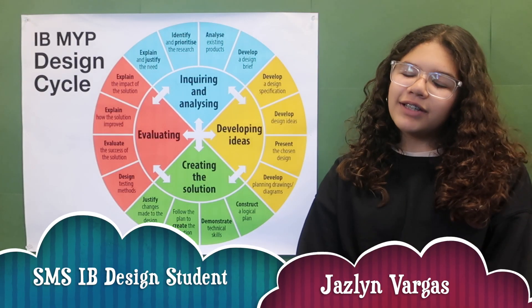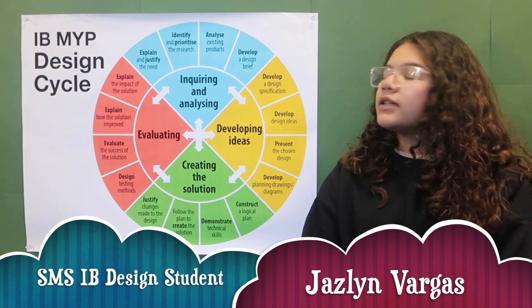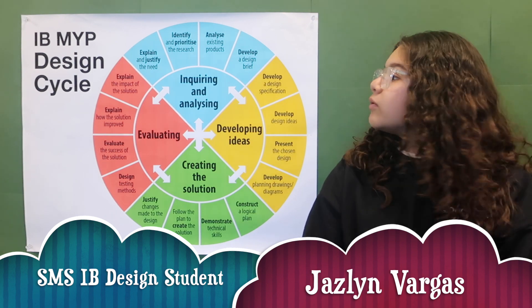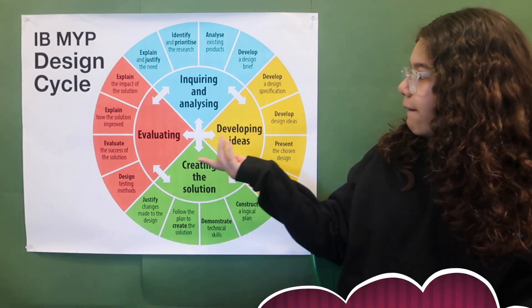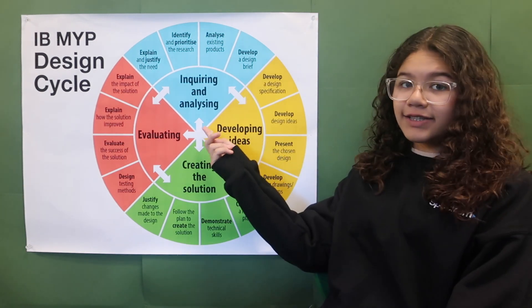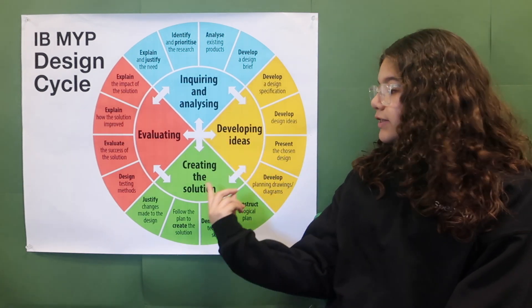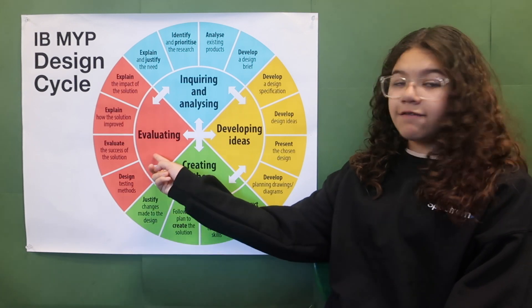The design cycle is made up of four strands, which you can see right here. We have inquiring and analyzing, developing ideas, creating a solution, and evaluating.